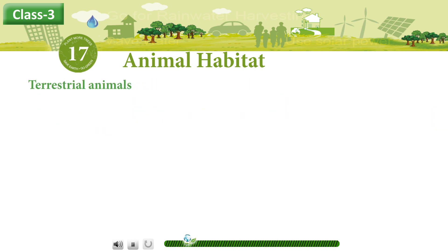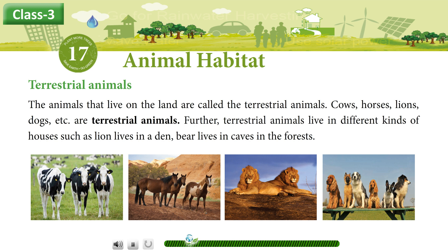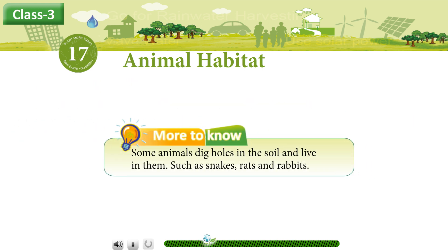Terrestrial Animals. The animals that live on the land are called terrestrial animals. Cows, horses, lions, dogs etc. are terrestrial animals. Further, terrestrial animals live in different kinds of houses — such as a lion lives in a den, and a bear lives in caves in the forest. Some animals make holes in the soil and live in them, such as snakes, rats, and rabbits.